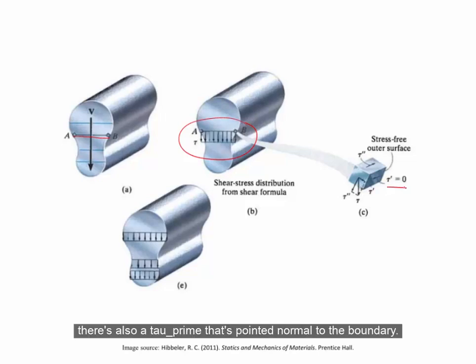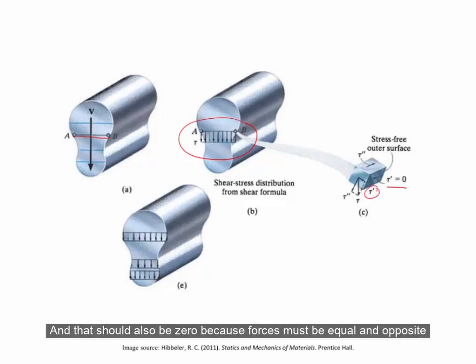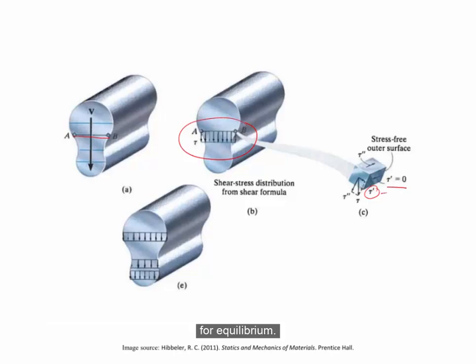To maintain equilibrium, there is also a tau prime pointed normal to the boundary, and that should also be zero because forces must be equal and opposite for equilibrium.